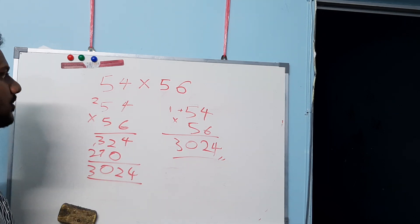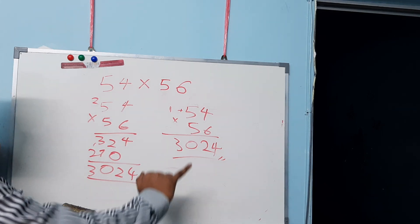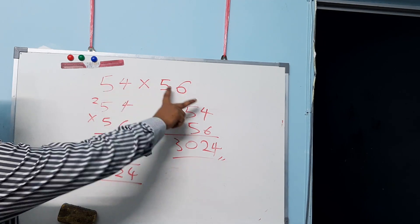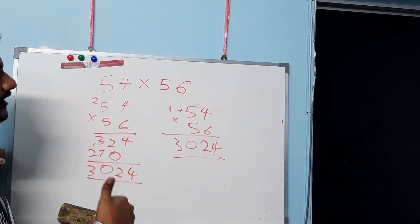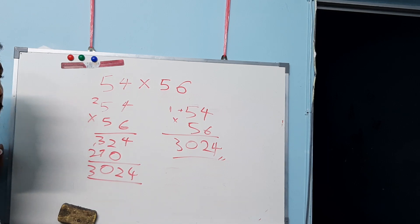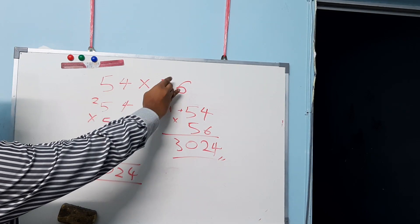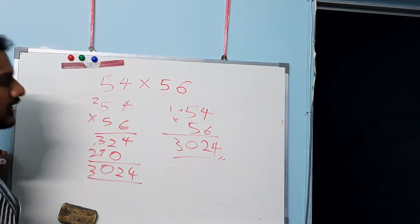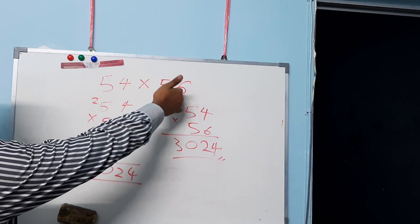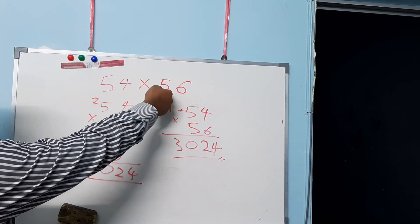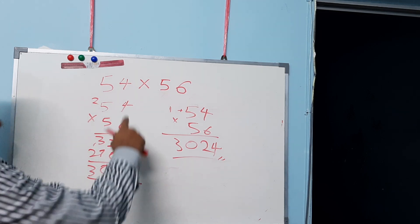Unfortunately no — there are two primary rules to consider. Rule number one: in both numbers, the left-hand side value should be the same — it should be a common value. In this example we have 5. It can be 4, 3, or anything. For example, 33 times 37, or 44 times 46, or 74 times 76.